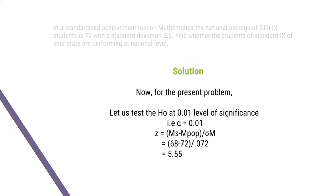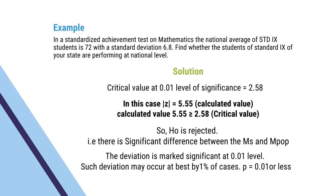This is called the calculated value. The critical value at 0.01 level of significance is 2.58. Mod Z is 5.55 — that is the calculated value. The calculated value 5.55 is greater than the critical value 2.58. So, the null hypothesis is rejected. There is a significant difference between the sample mean and the population mean. The deviation is marked significant at 0.01 level.